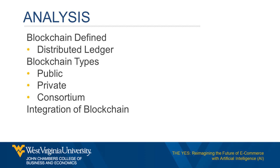Consortium blockchains are a hybrid of public and private blockchains where the consensus procedure is controlled by a small group of nodes within the network, rather than by a single organization (private) or all nodes (public). Permissions to read and write are flexible and determined by the consensus of the controlling nodes. Consortium blockchains are common in cross-enterprise settings where a group of organizations within the same industry or supply chain needs to share information in a secure, efficient, and transparent manner.